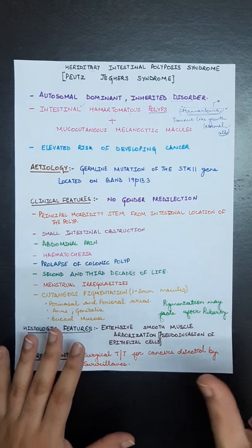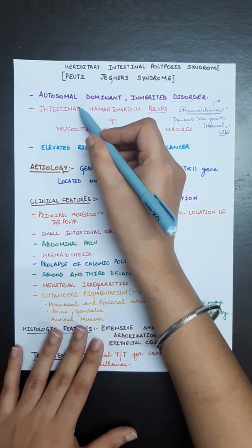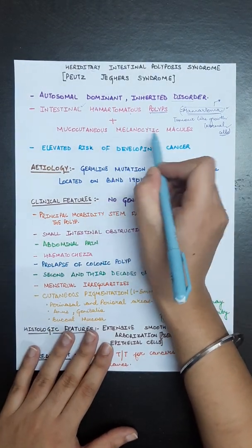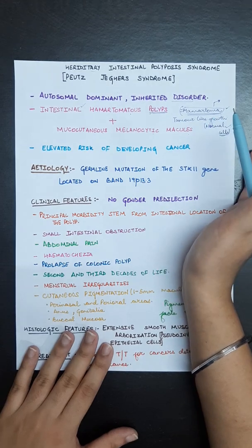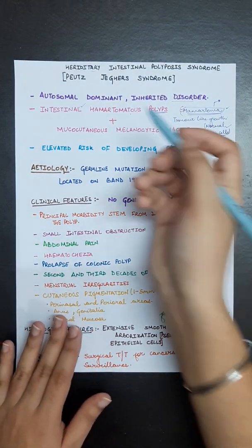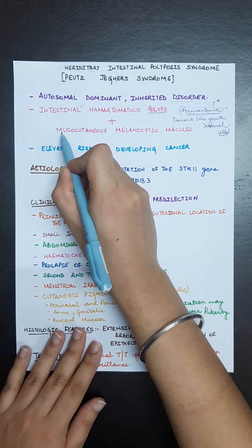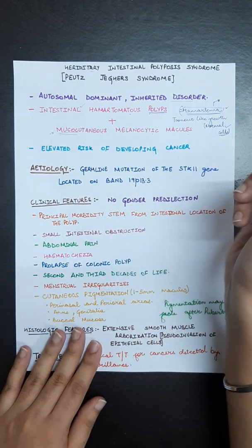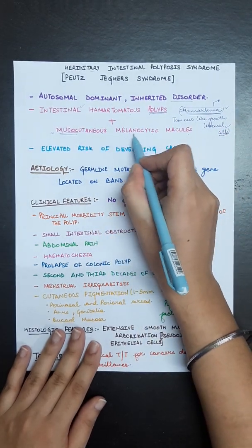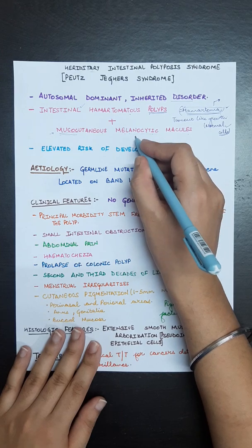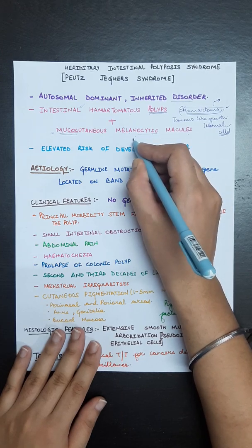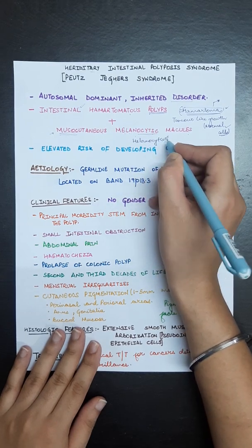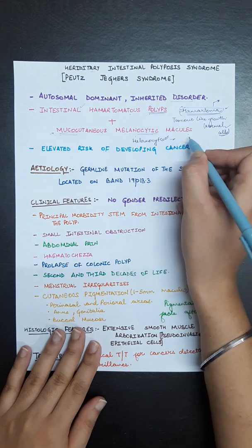There are also mucocutaneous melanocytic macules present in this syndrome. Mucocutaneous means this pigmentation can be present on the skin as well as mucous membranes. Melanocytic means there are pigment-producing cells known as melanocytes, so these melanocytes will produce pigment.